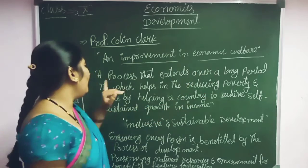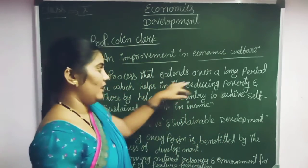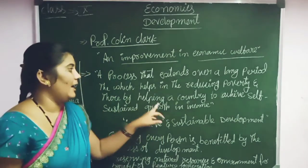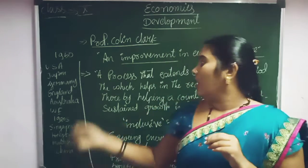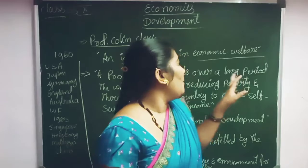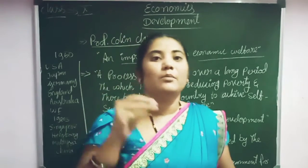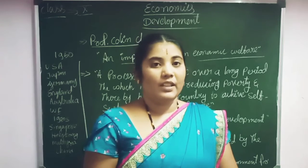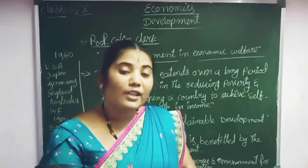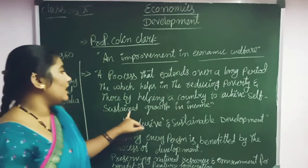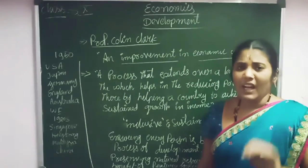Development over a long period helps in reducing poverty. The long period is considered as reducing poverty and other economic illness, thereby helping the country achieve self-sustained growth in income. Over the long period, the process involves reducing poverty, making more production, providing employment opportunity, and providing market facilities. The long-time achievement of this process causes further reduction of poverty and makes sustained growth in income.